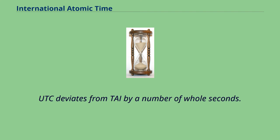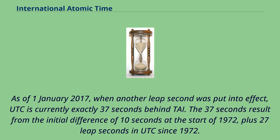UTC deviates from TAI by a number of whole seconds. As of January 1, 2017, when another leap second was put into effect, UTC is currently exactly 37 seconds behind TAI. The 37 seconds result from the initial difference of 10 seconds at the start of 1972, plus 27 leap seconds in UTC since 1972.